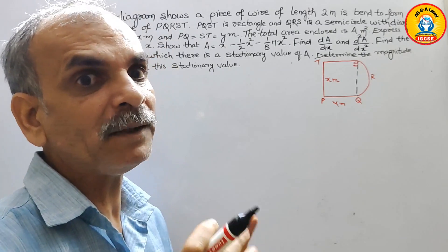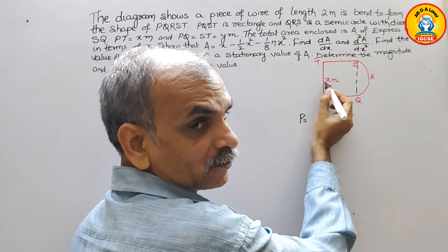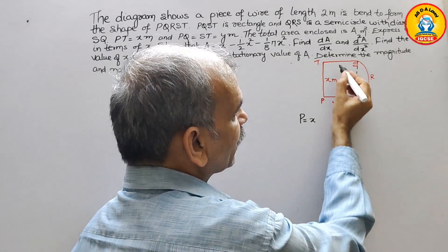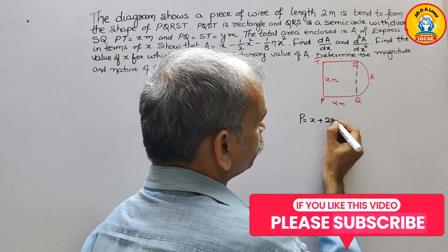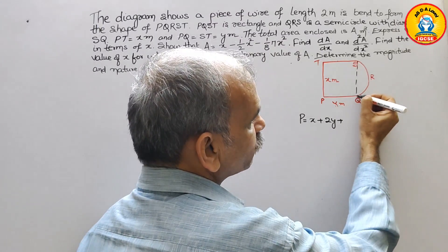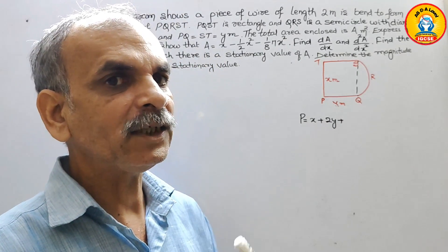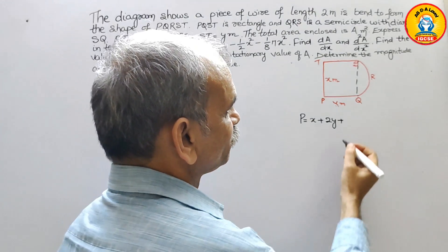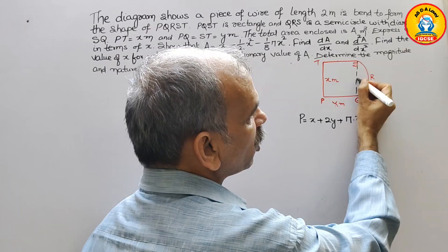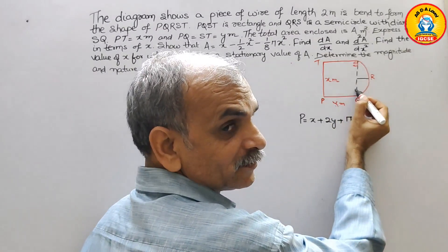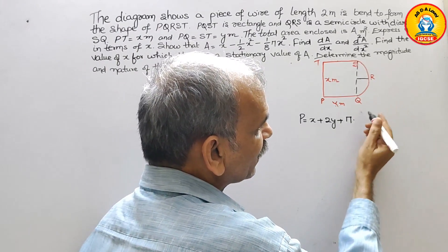Now we write the perimeter. The bottom side PT is X. The two vertical sides PQ and ST together give Y plus Y, which is 2Y. Then from S to Q along the curved part, that is the circumference of a semicircle, which is pi·R. The diameter is X, so the radius R is X divided by 2.